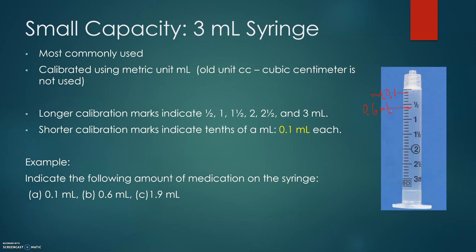For example C, 1.9 milliliters: this is 1 milliliter, then 1 and a half. We continue counting — 1.6, 1.7, 1.8, 1.9. That will be 1.9 milliliters.